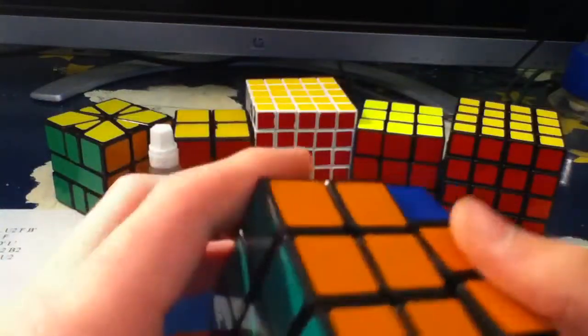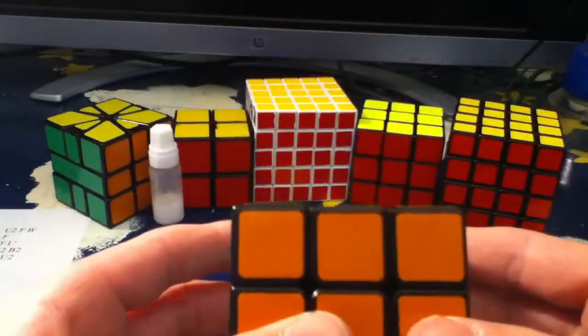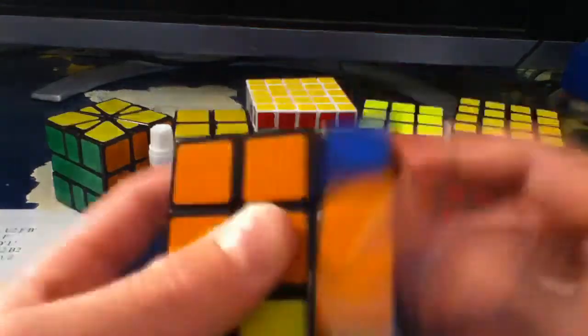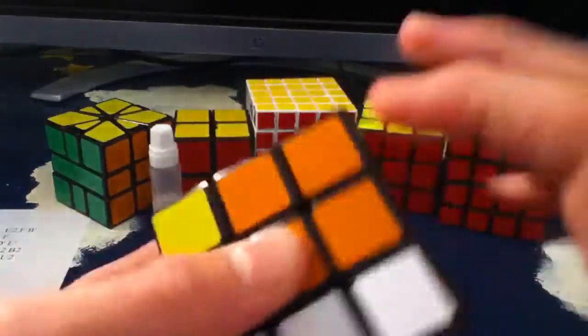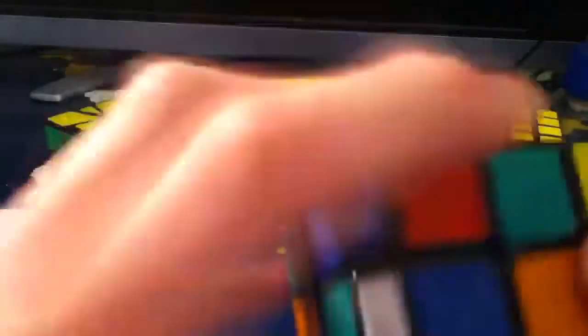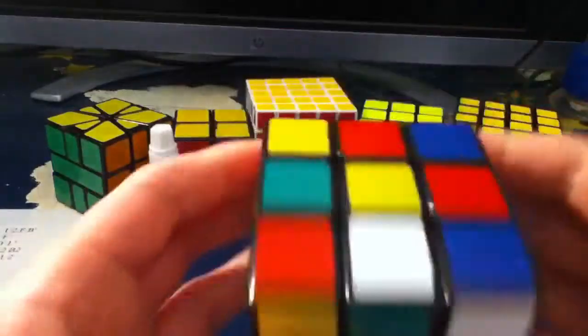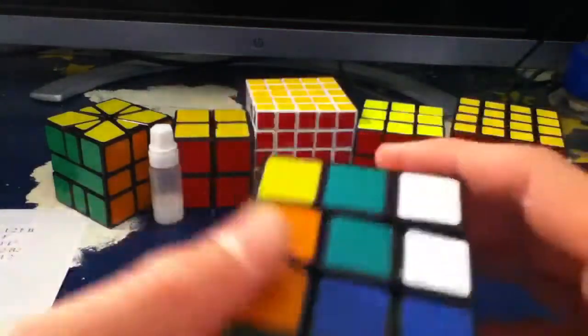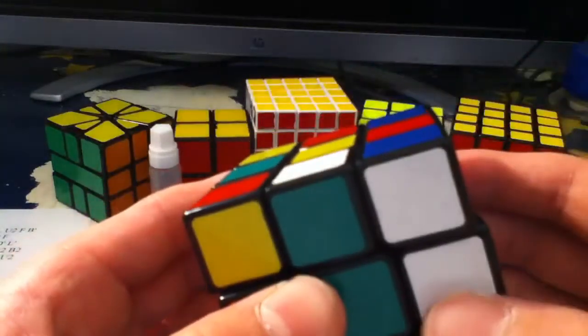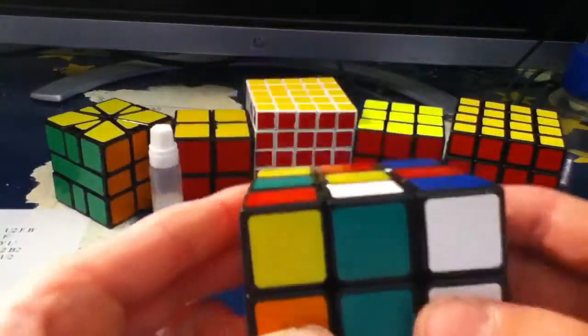And now I have the chameleon OLL and an A perm. So the final scramble. Alright.